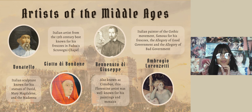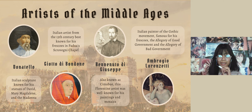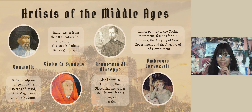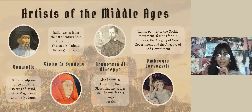These are some of the artists of the Middle Ages. The first one is Donatello, an Italian sculptor known for his statues of David, Mary Magdalene, and the Madonna. Next is Giotto di Bondone, an Italian artist from the 13th century, best known for his frescoes in Padua's Scrovegni Chapel. Next is Benvenuto di Giuseppe, also known as Cimabue, a Florentine artist well known for his paintings and mosaics. Lastly, the Italian painter of the Gothic movement, Ambrogio Lorenzetti, famous for his frescoes The Allegory of Good Government and The Allegory of Bad Government.